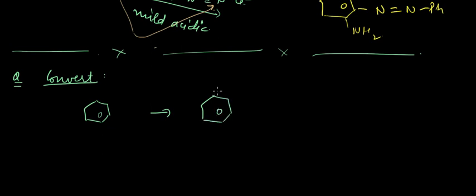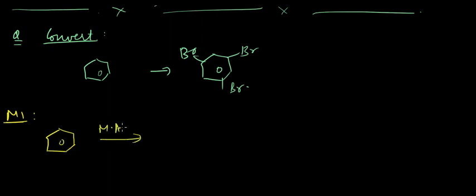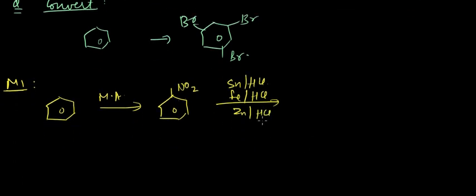One approach: we start with benzene and react it with mixed acid — concentrated HNO3 and H2SO4 — so nitration of benzene takes place and we get a nitro-substituted benzene ring. Then we pass in reducing agents: Fe/HCl, Sn/HCl, or Zn/HCl — all the d-block elements act as reducing agents by themselves undergoing oxidation.